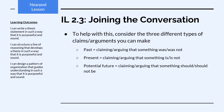We can make claims and arguments about the past — claiming or arguing that something was or was not. We can make claims or arguments about the present — claiming or arguing that something is or is not. Or we can make claims and arguments about the potential future — claiming or arguing that something should or should not be.